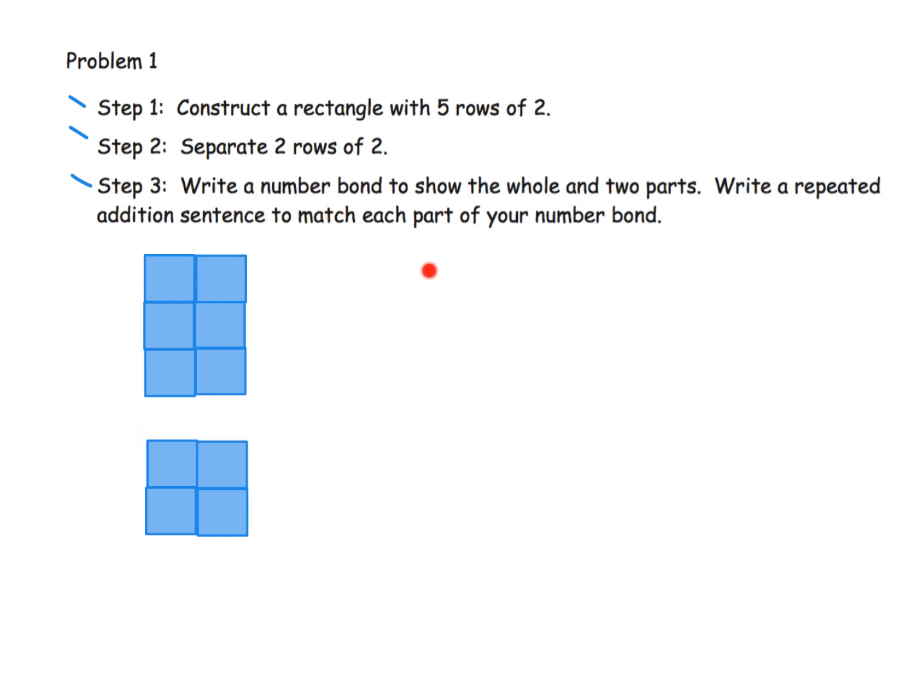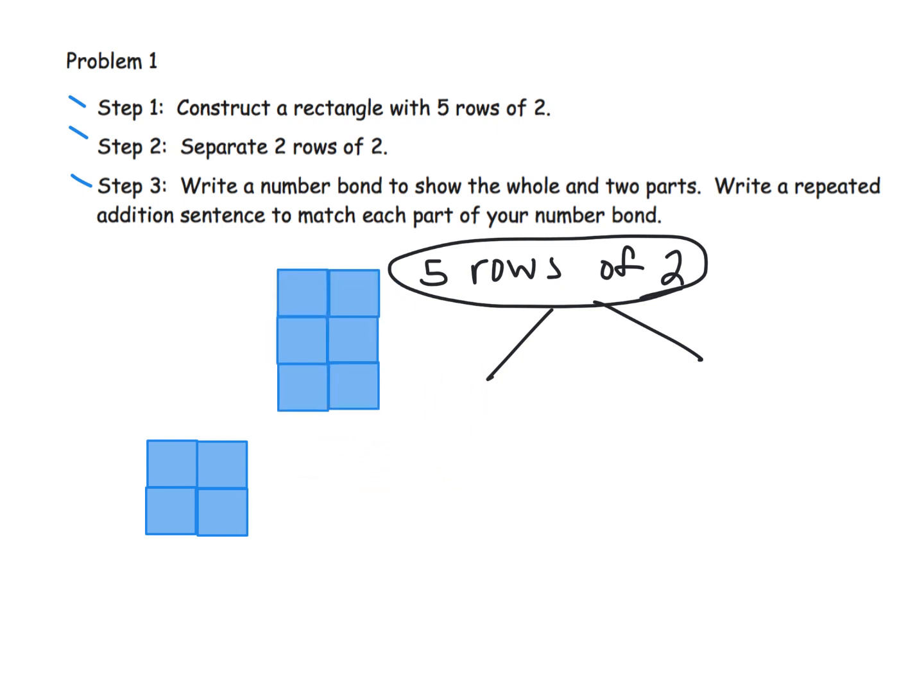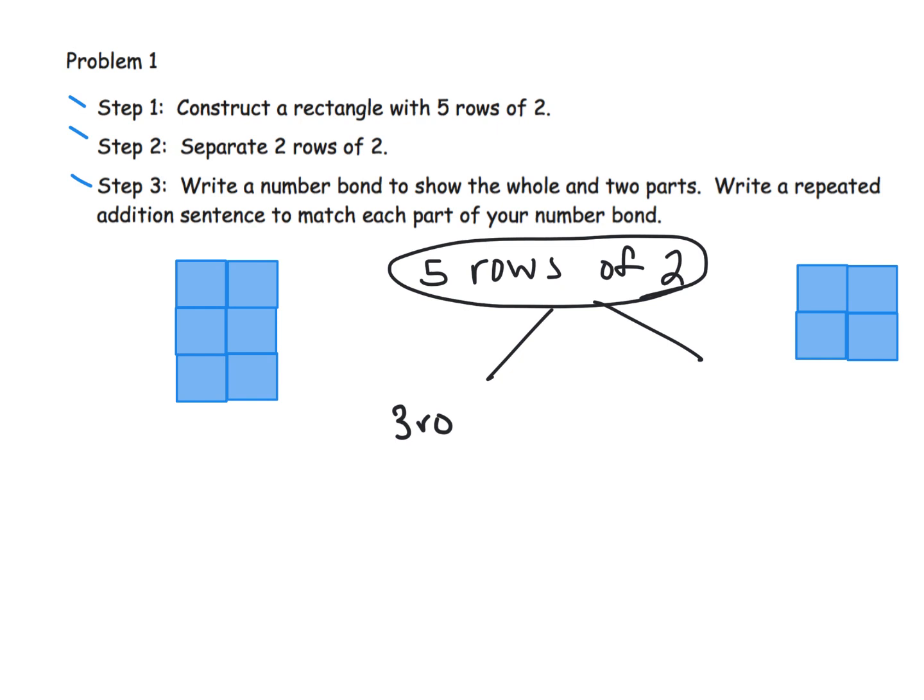Now write a number bond to show the whole and the two parts. So the idea would be we started with five rows of two, so that's the whole. Then we broke it up. This goes here and this goes here. So you can think of this as, I'm going to move that out of the way there, and you could think of this as three rows of two and two rows of two.